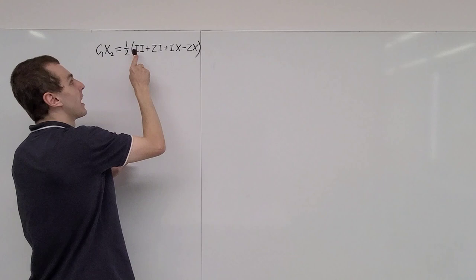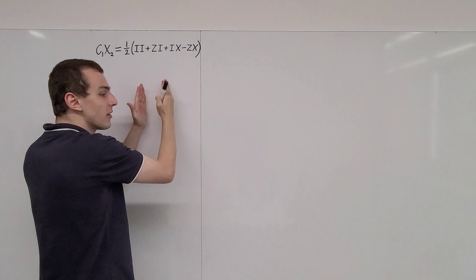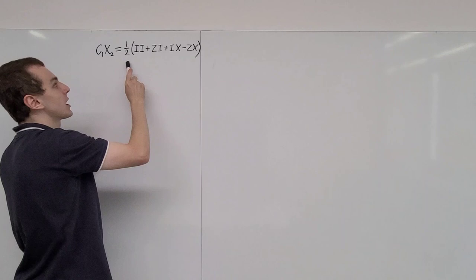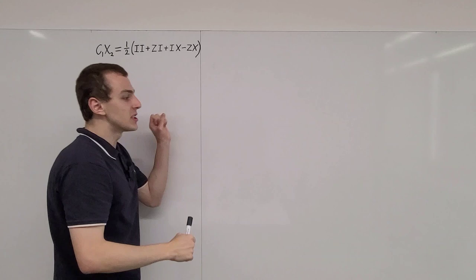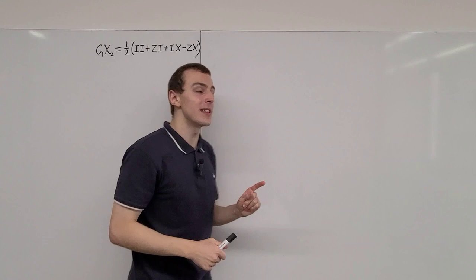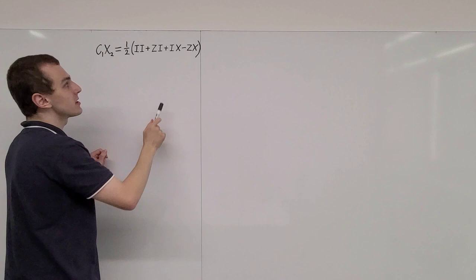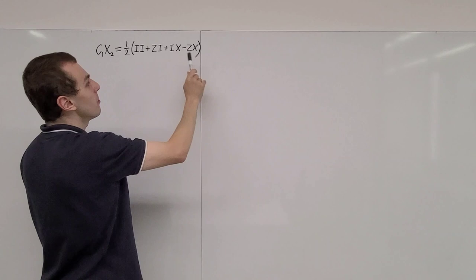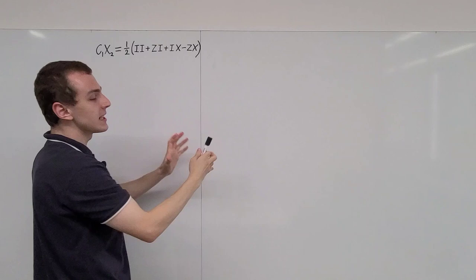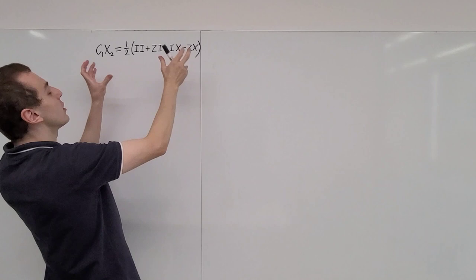We could explicitly write the tensor product symbol — a little X with a circle around it. So this is I tensor product I, and the order tells us which qubit we're dealing with: first qubit one, then qubit two. One-half is the coefficient for all of these terms. If we square the individual coefficients and sum them, we should get one — that means the expression is normalized. Squaring one-half gives a quarter, and four quarters gives one. Note that the ZX term has a coefficient of minus one-half, but when squared it gives plus one-quarter.